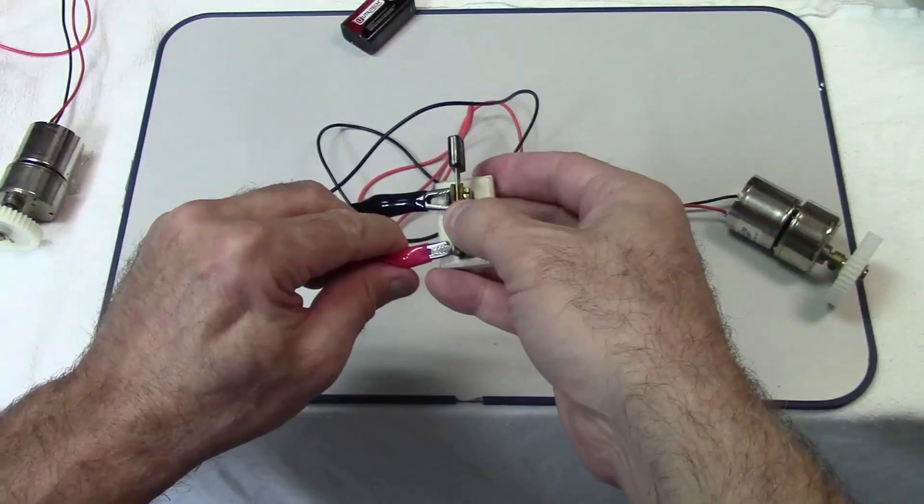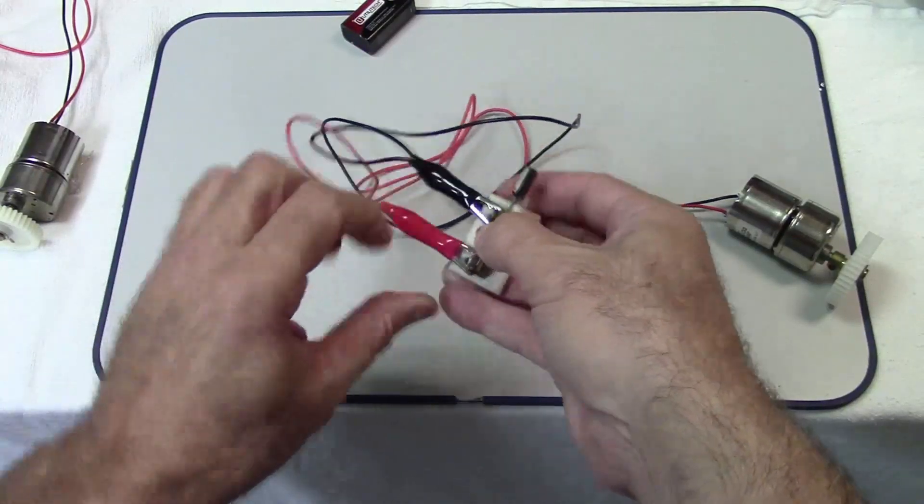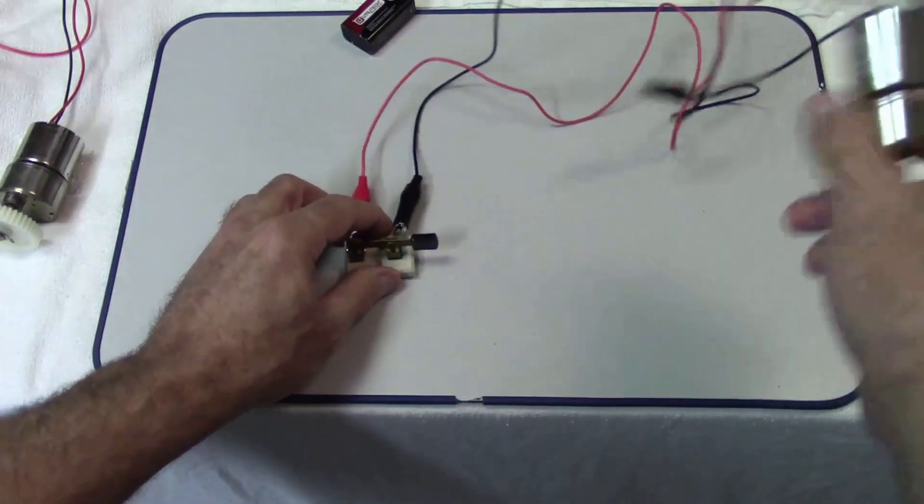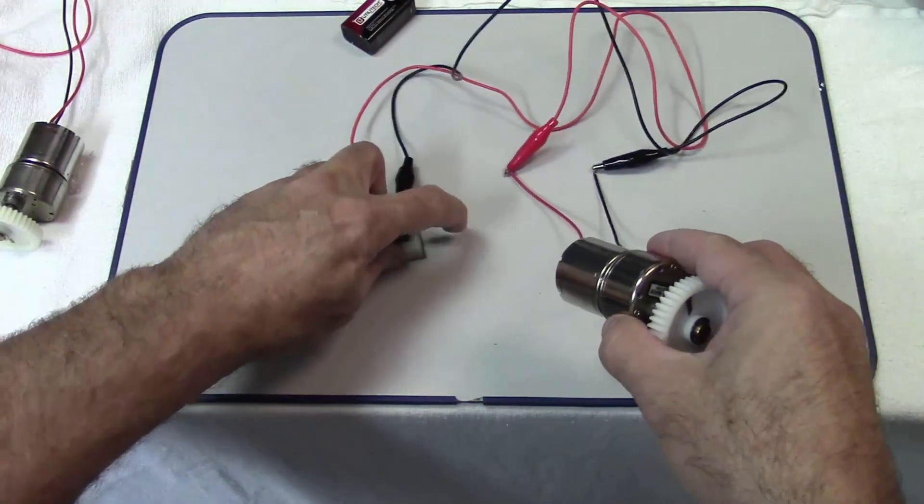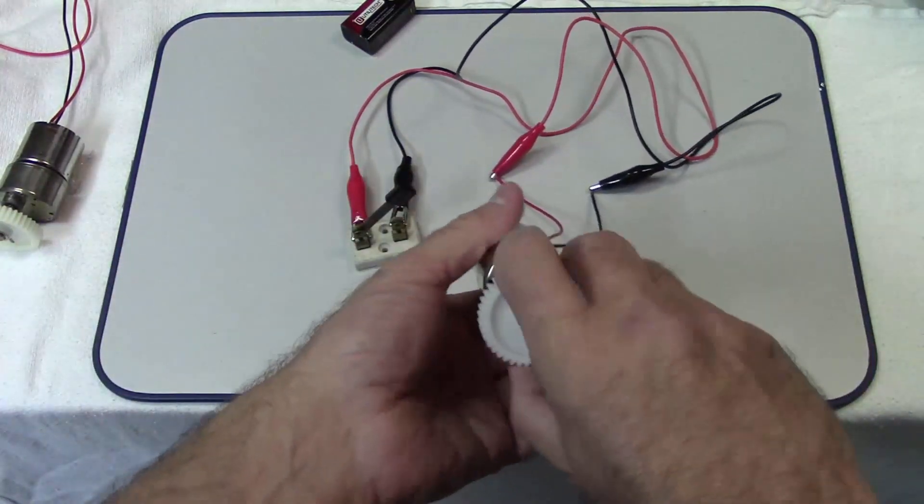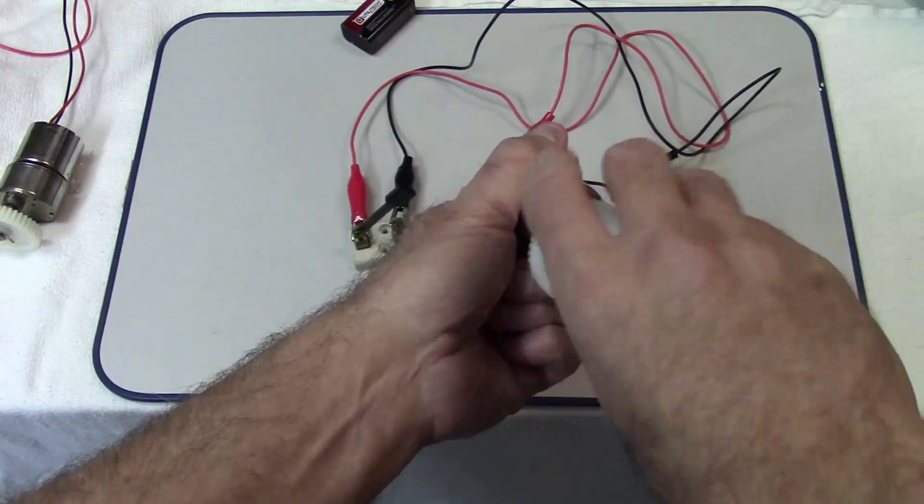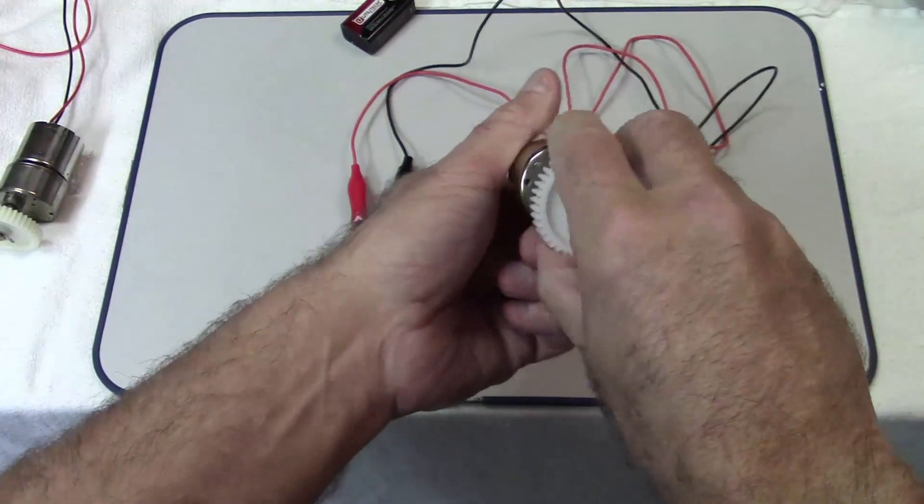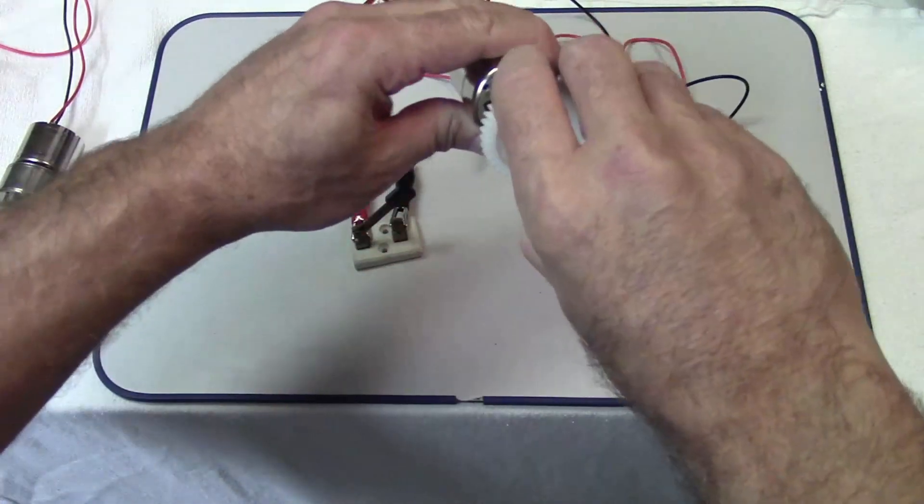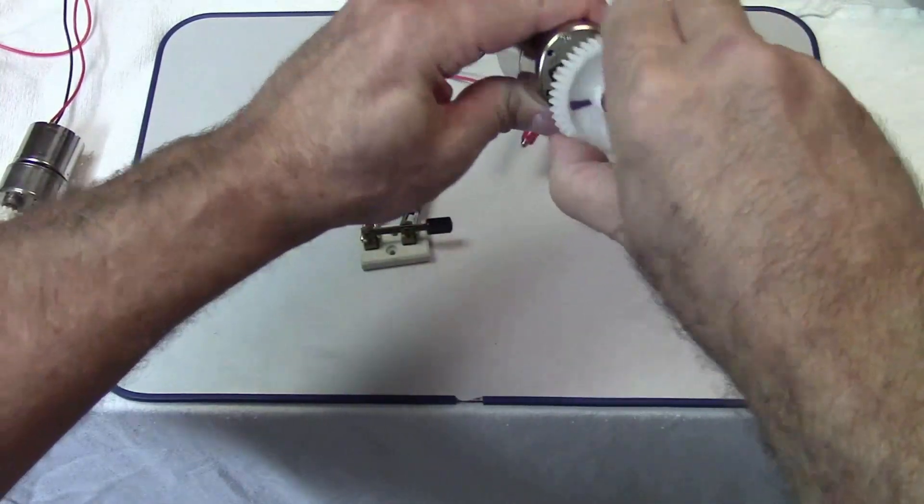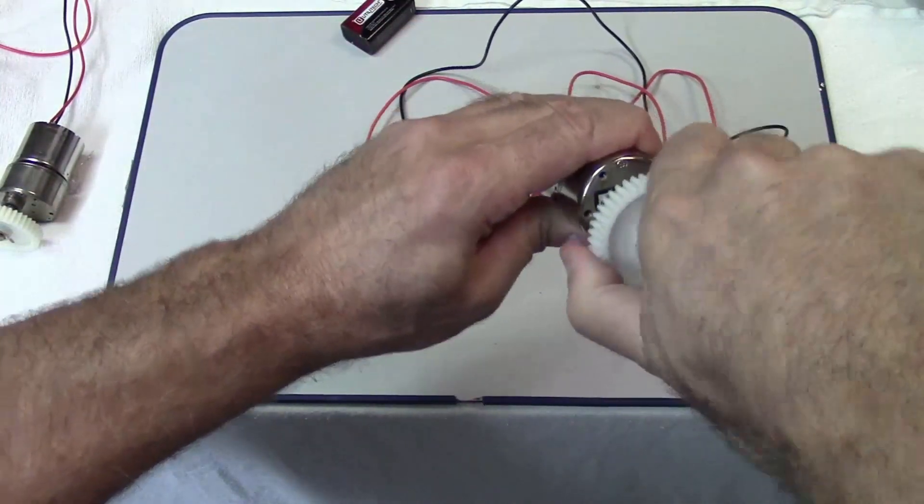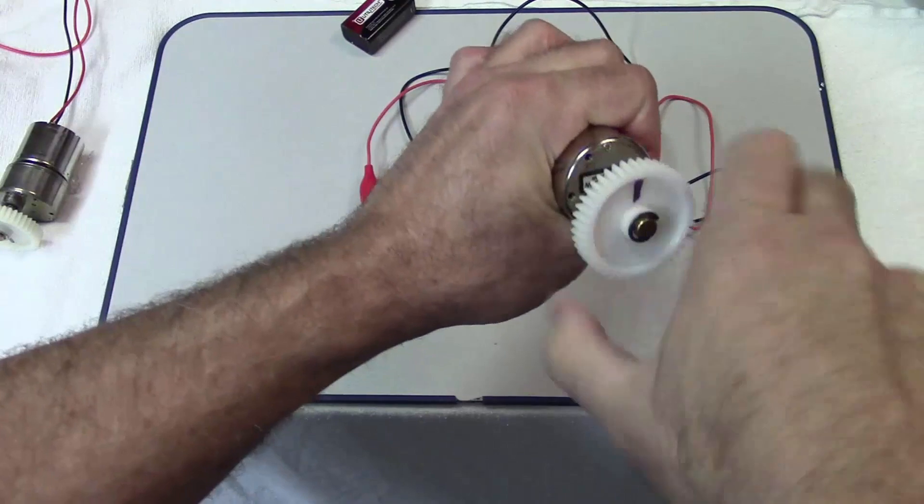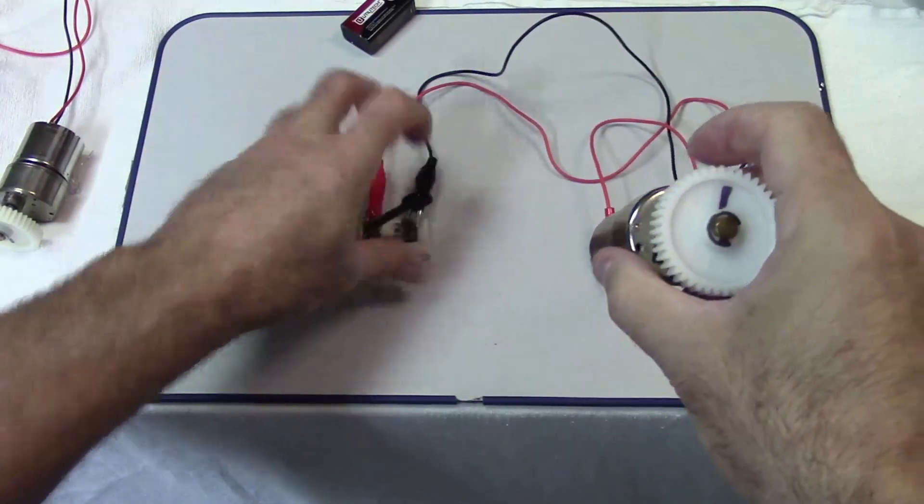So I'm going to take this motor and hook it to a little knife switch here. I'm going to open the knife switch. And you notice it coasts quite a bit ordinarily. Now it's very difficult to turn because I'm dynamically braking it. I'm going to open the switch up.